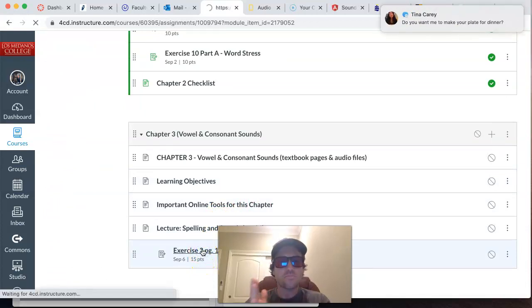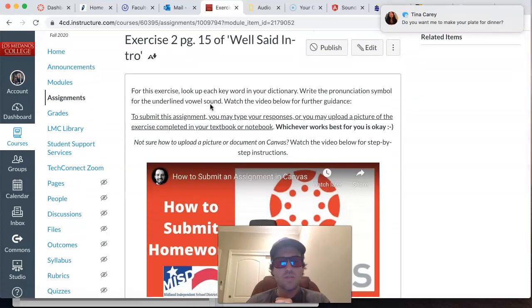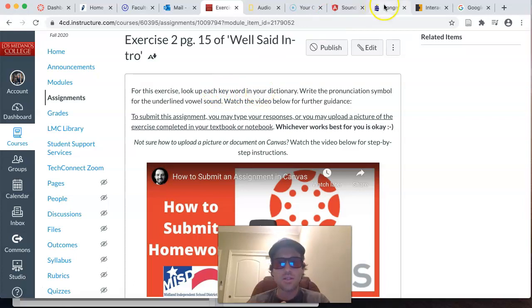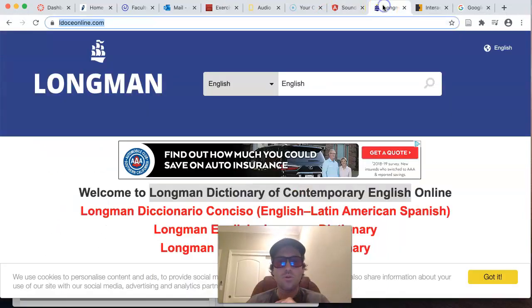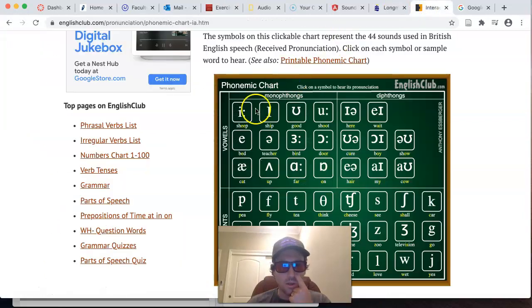But again, back to Exercise 2, page 15, what you need to do is you need to look up the keyword, look up each keyword in your Longman dictionary. That's also from the Important Tools. That's this dictionary that I showed you previously in this module. So look up the keyword in Exercise 2 and write the pronunciation symbol for the underlined vowel sound.